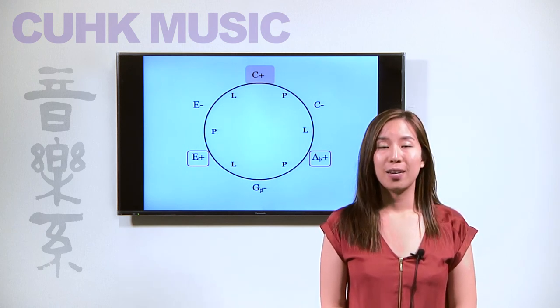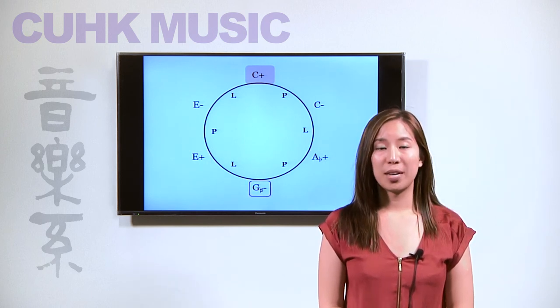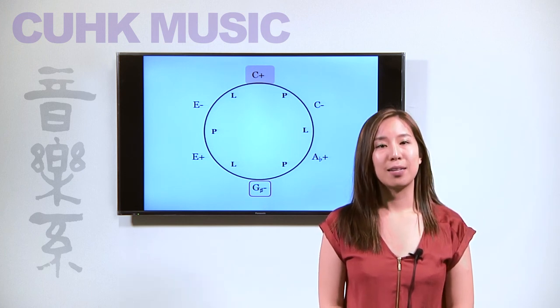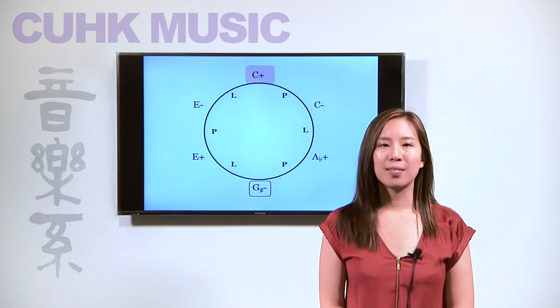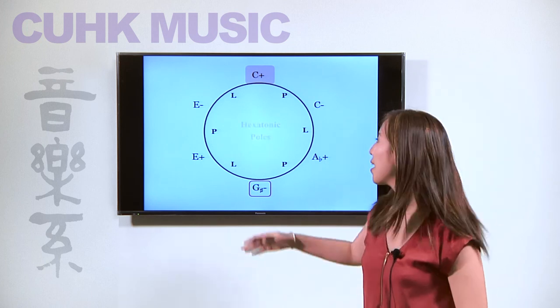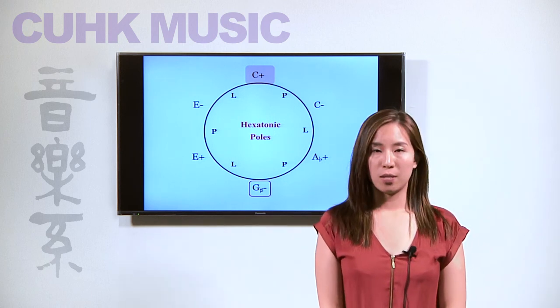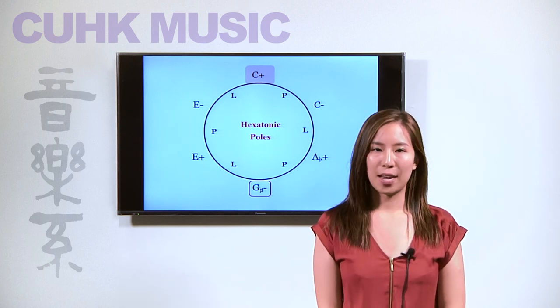Finally, the triads that are diametrically placed have three pitch class displacements, and hence no common tones, and they are modally mismatched. This pair of triads are also known as the hexatonic poles, which exhaust the hexatonic collection and are maximally disjunct within the cycle.